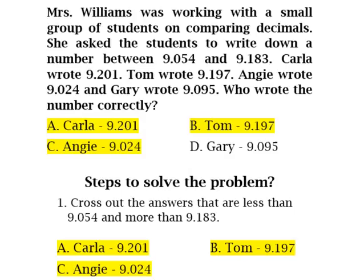Okay, so for Carla we see that she was too high. Her answer is 9.201, well 9.201 is greater than 9.183, so we can mark that answer choice out. Tom's answer B is 9.197. Well that's greater than 9.183 as well, so Tom is out of here too. C, Angie's is 9.024. Well 9.024 is actually less than 9.054.